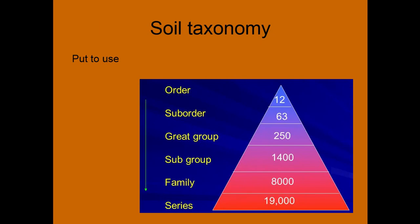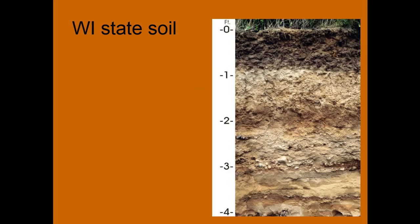So if we go back to our hierarchy of soil taxonomy, then we can put it to use in an example — we'll do the Wisconsin state soil. I'll give you a second to remember what the Wisconsin state soil is. Here's a picture of a profile for it. And as you all remember, it's the Antigo Silt Loam.